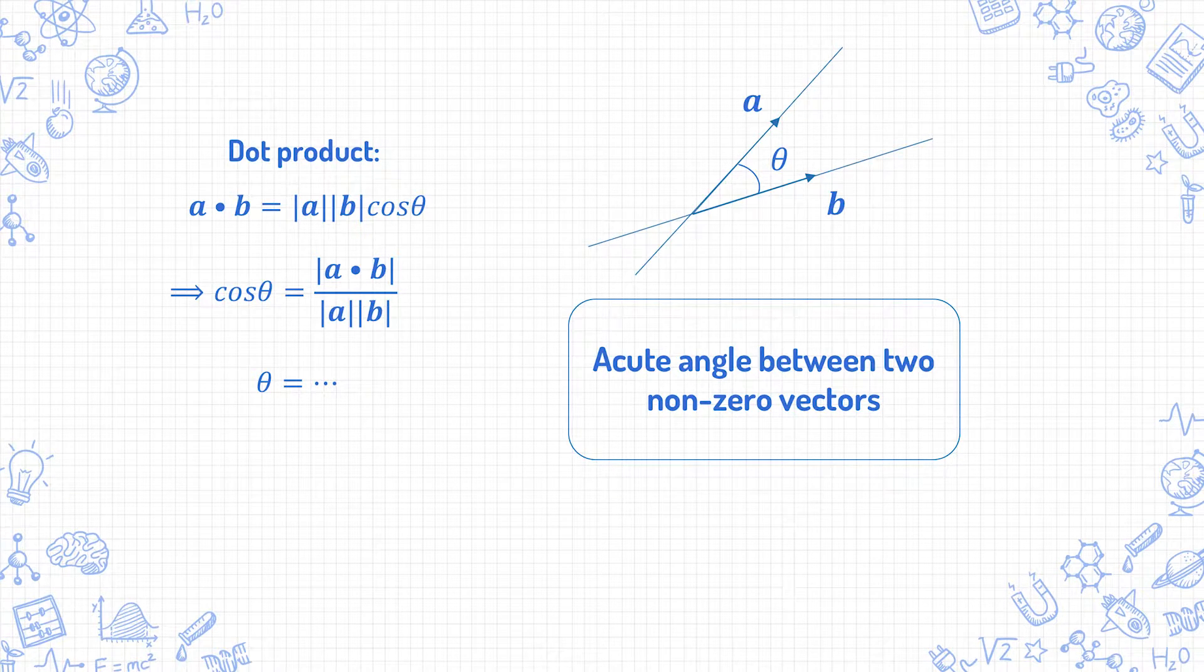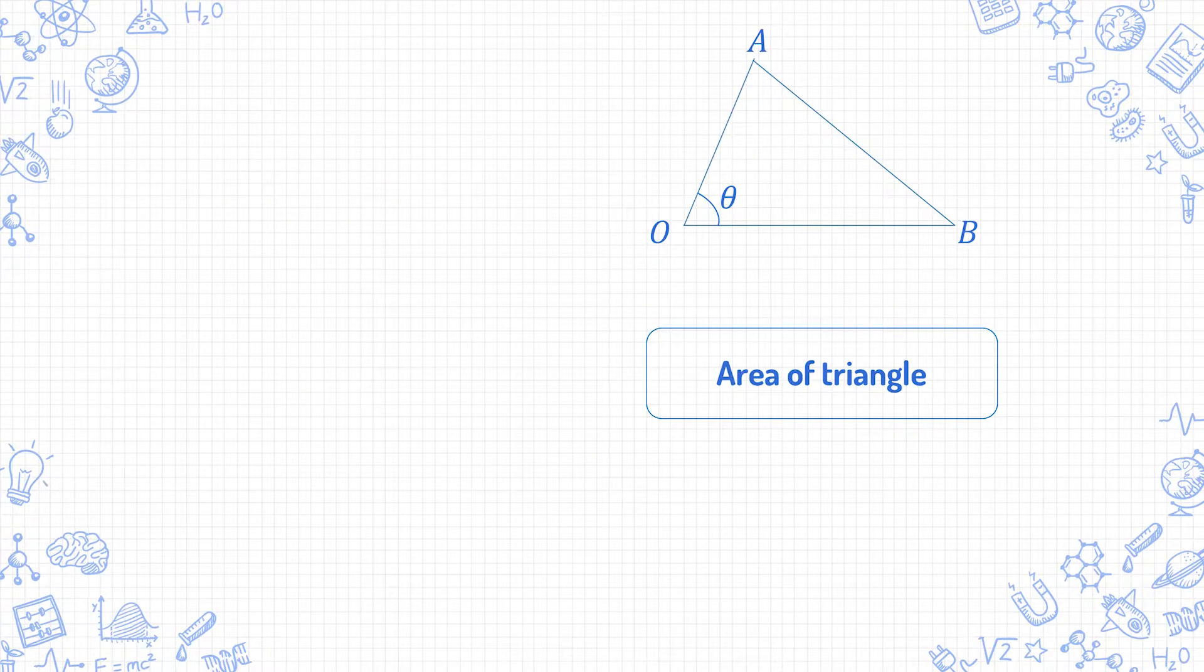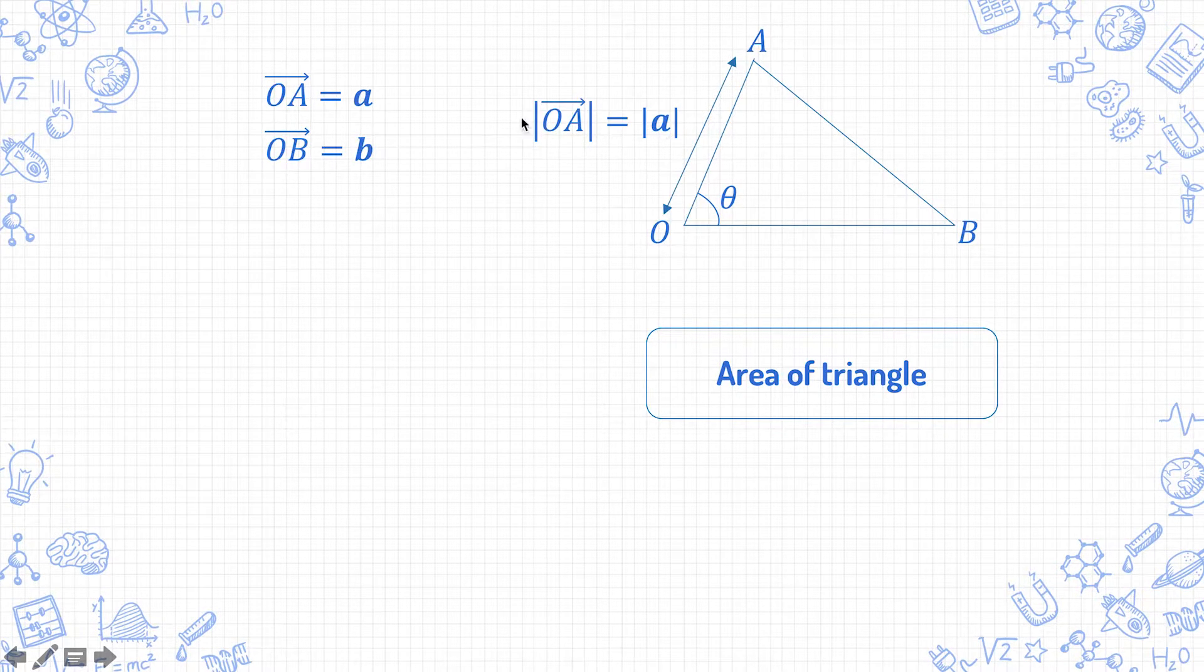If you find this manageable, then we can move on to the next one, finding the area of a triangle. If I let the vector OA equals a and OB equals b, then the length of the line OA is mod of a or mod of OA.